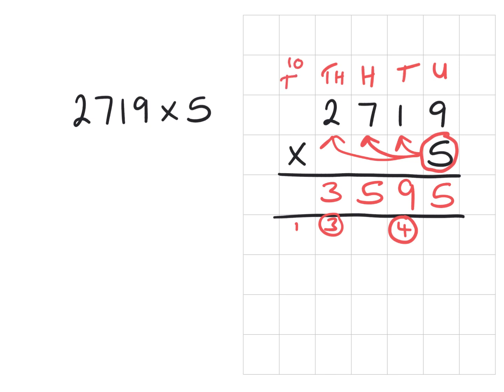And into the 10 thousands column here, we just have the 1 by itself which goes into the 10 thousands like so. So we have a final answer of 13,595.